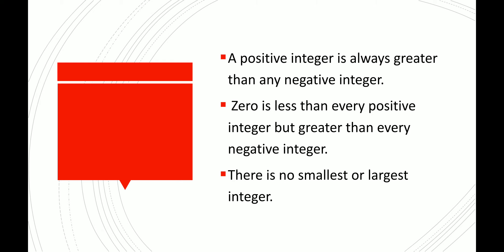A positive integer is always greater than any negative integer. That means all positive numbers are always greater than any negative integer. For example, 3 is greater than minus 1, and 3 is greater than minus 300. So, any positive integer is always greater than any negative integer.